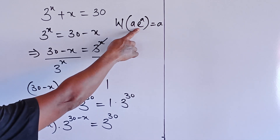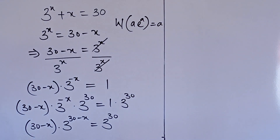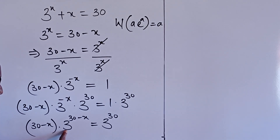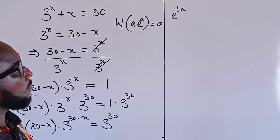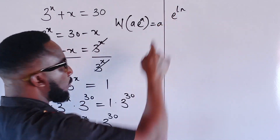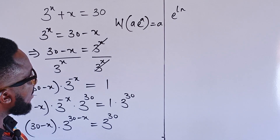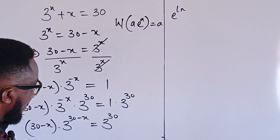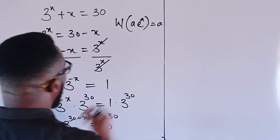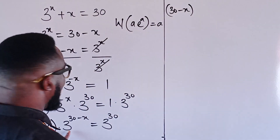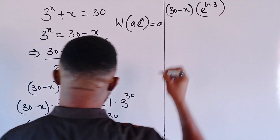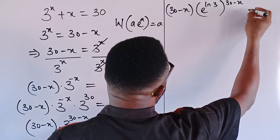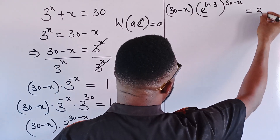Now we need to write the base 3 in terms of e to the ln, since the exponential function and the natural logarithmic function are inverse mathematical processes, so e to the ln equals 1. I can write 30 minus x times 3 to the power of 30 minus x, where this 3 is written as e to the ln of 3, all raised to the power of 30 minus x, equal to 3 to the power of 30.